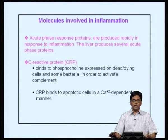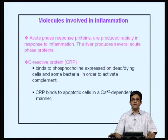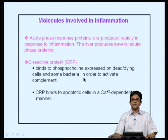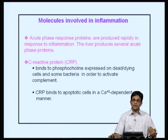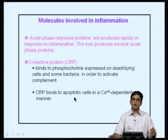An important class of proteins that play a role in innate immunity are acute phase response proteins. These are produced rapidly in response to inflammation, and the liver is responsible for production of several acute phase proteins. An important acute phase protein is C-reactive protein (CRP), which binds to phosphocholine present on dead or dying cells and some bacteria in order to activate complement. It binds to apoptotic cells in a calcium-dependent manner. CRP is important for clearance of dead cells — once the inflammatory reaction is over, it helps down-modulate and remove all the debris around.